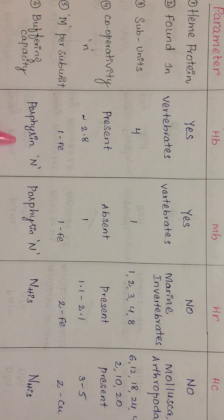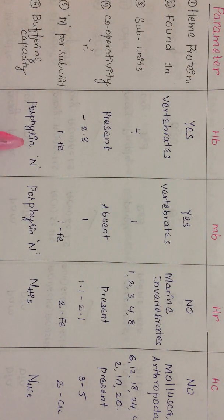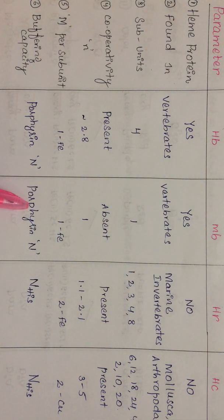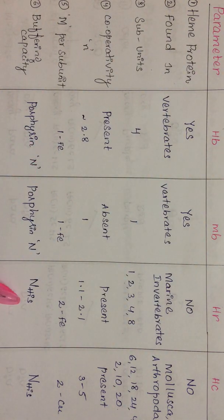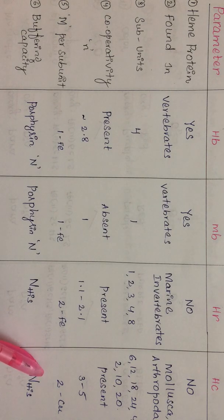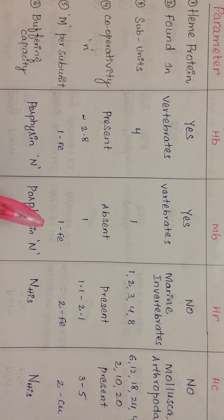Regarding buffering capacity: this refers to the ability to handle redox changes at the active site metal. In hemoglobin and myoglobin, iron in the +2 oxidation state slowly shifts to +3 upon oxygenation, then back to +2 upon deoxygenation. Similarly, in hemerythrin, iron switches between +2 and +3, and in hemocyanin, copper switches between +1 and +2. This switching of oxidation state causes a loss or gain of electron density at the metal site, requiring buffering to prevent sudden changes.